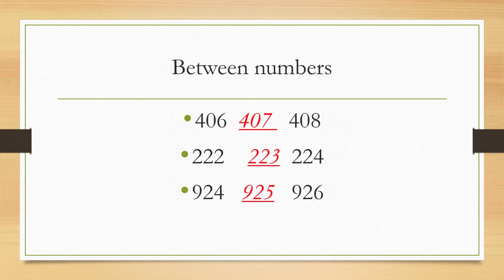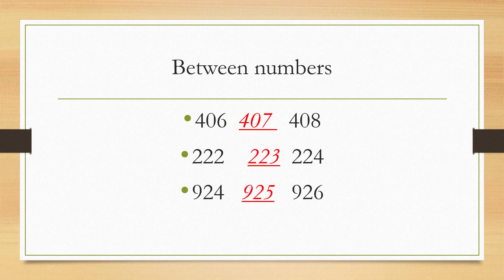Now let us solve some between numbers. First, we have numbers 406 and 408. The number in between is 407. Next, the numbers are 222 and 224, so the number in between is 223. Third example: the number in between 924 and 926 is 925.